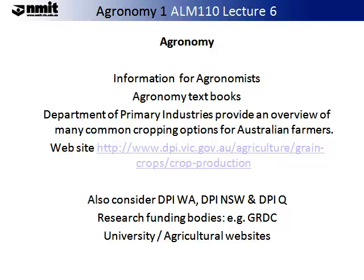When you start off your career in agronomy, one of the most important things that you can do is build up a body of knowledge. There are many textbooks available for agronomists that will help you gain this knowledge. Also the Department of Primary Industries, located all over Australia, are exceptionally good resources for Australian farmers. The DPI website leads to the crops section and crop production — you will notice that all of the crops are separated and there are specific management aspects and considerations. You may also look at the WA DPI, New South Wales DPI and the DPI for Queensland. The Grain Research and Development Corporation and universities and agricultural websites also offer additional information for management.